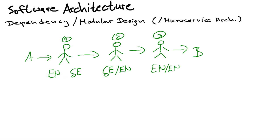Guy number one gets a message in English and speaks in German. Guy number two, because guy number three only understands English, translates it back to English, and then guy number three tells it to B — everything is fine. But there's one small problem: guy number two is not very good at translation and sometimes needs help checking if the translation is correct. So he asks guy three for advice — they have a little conversation: 'Is this correct? Yeah, makes sense.' And then guy three tells B. It's very important that the boss gets a very accurate message, which is why two and three are having a discussion on the best translation.